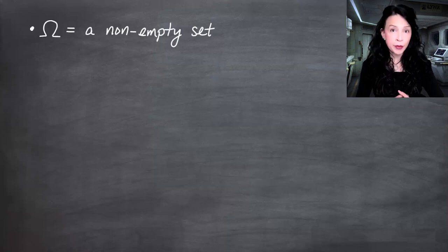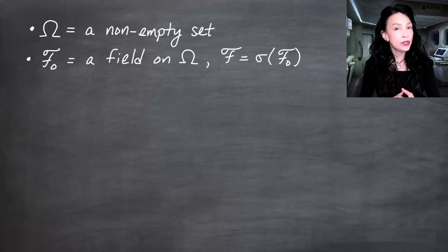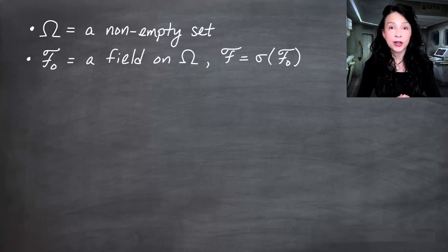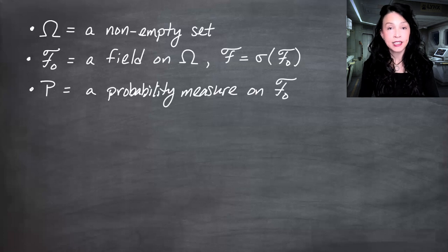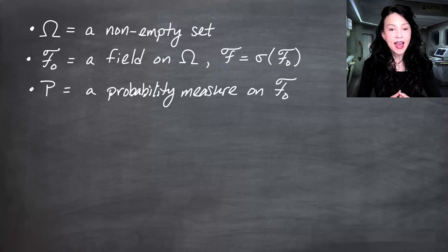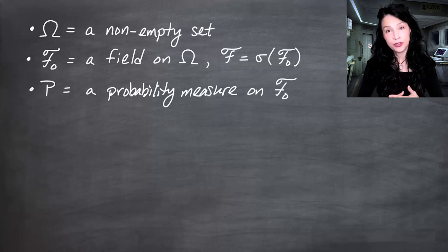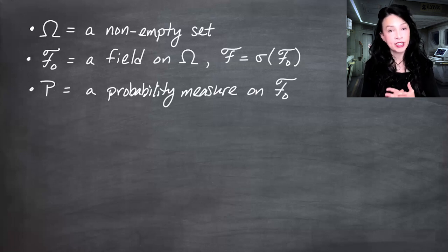We had a non-empty set omega. We had a field called F-naught. We used the big curly F to denote the sigma field generated by F-naught. We had a probability measure P which takes in sets from the field and gives us numbers, and we are ultimately trying to define that probability measure for sets in the bigger sigma field.